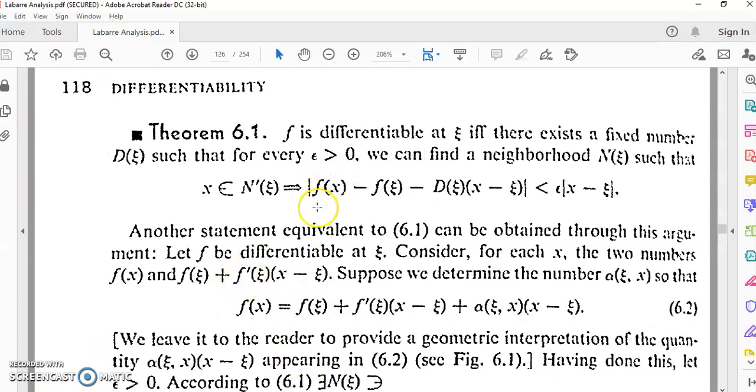This is the book that he's referring to. Over here on page 118, LeBar begins to talk about a particular theorem and he mentions that f is differentiable at ξ if and only if there exists a fixed number D(ξ) such that for every epsilon greater than zero, we can find a neighborhood N(ξ) such that this is true. By writing this capital D here, he is paving the way for differentiability. So this D(ξ) is in fact the derivative at ξ.